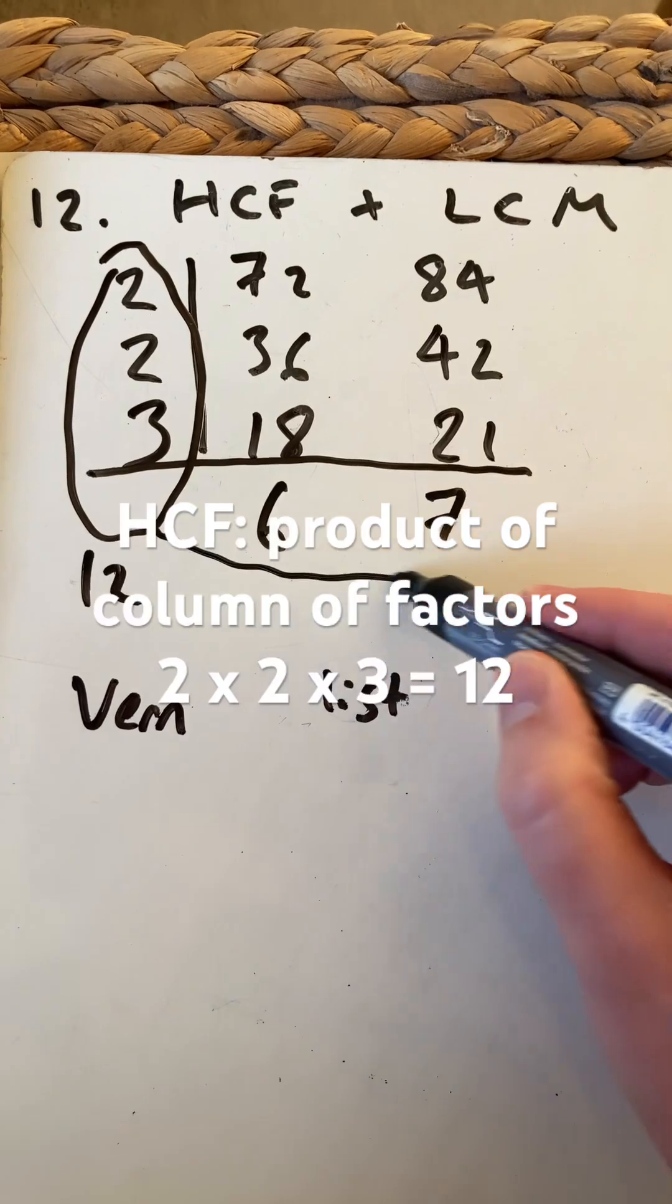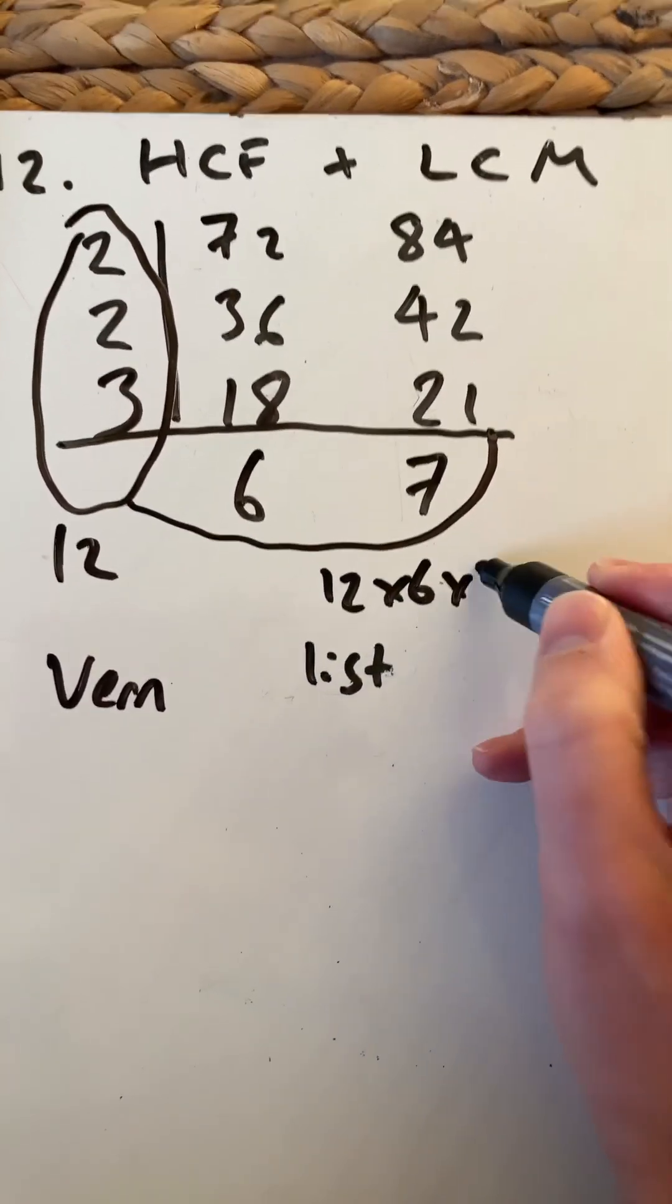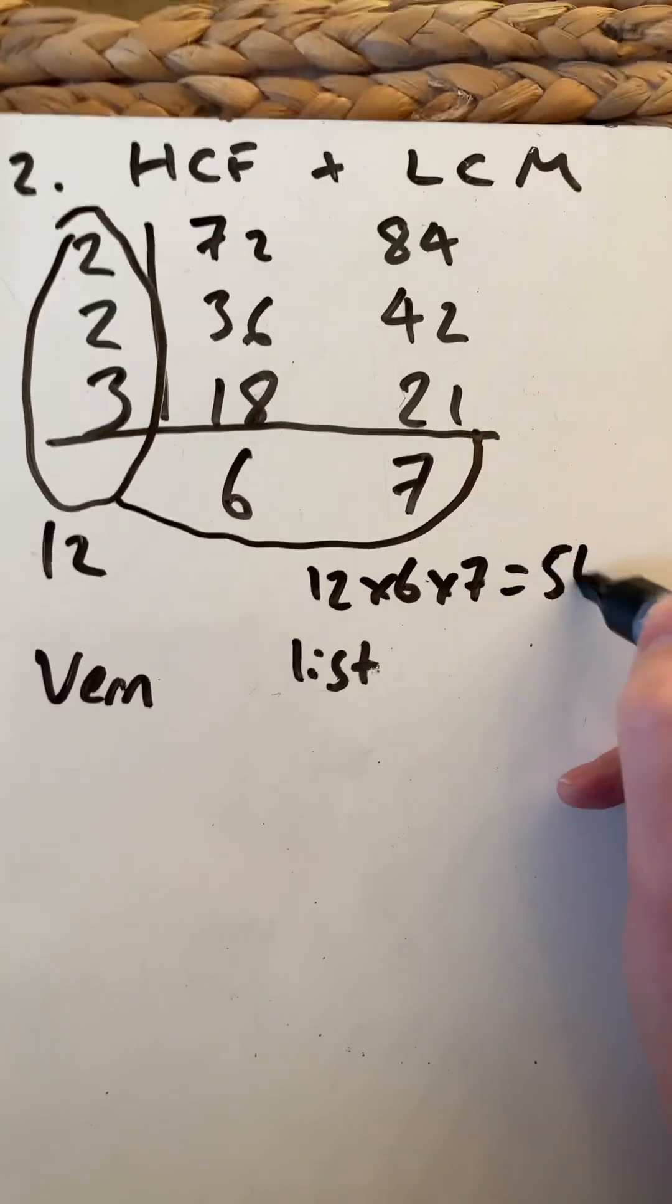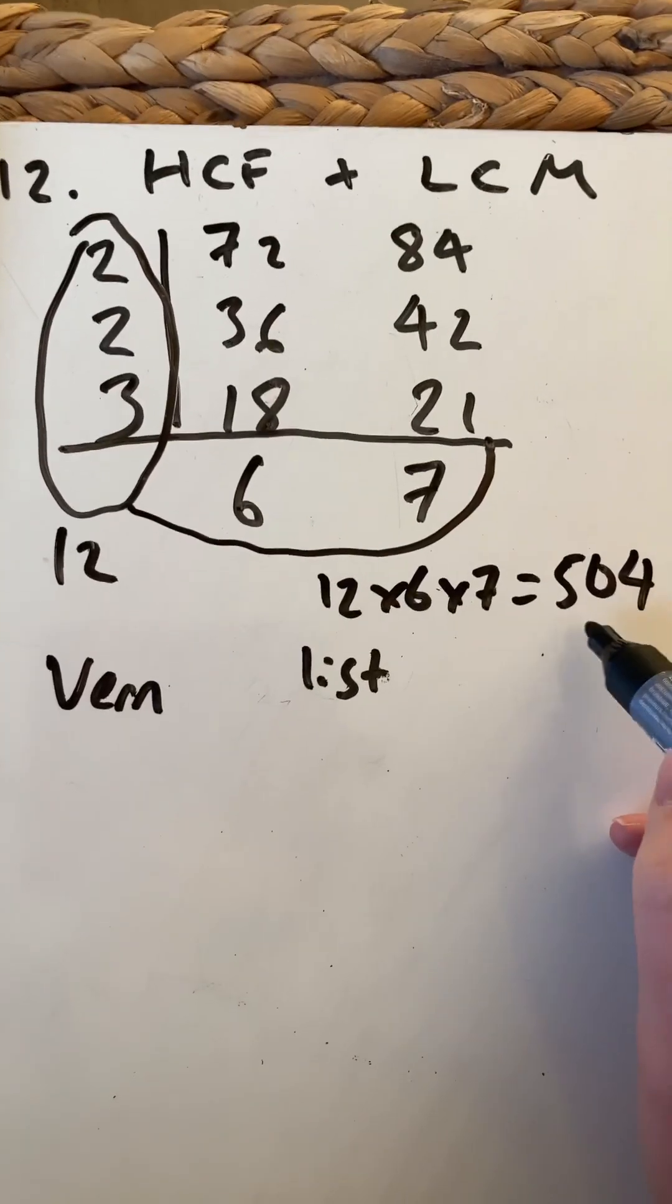If I multiply by 6 and 7, so 12 times 6 times 7, which is 504, that's the lowest common multiple.